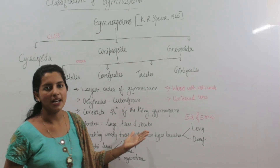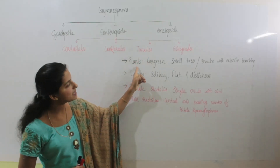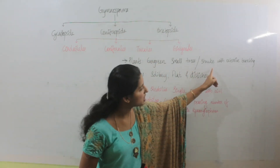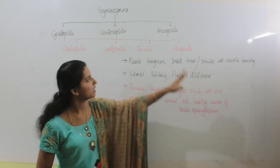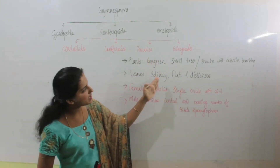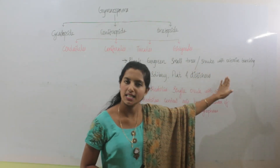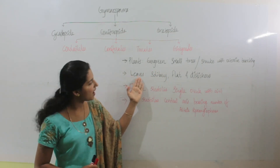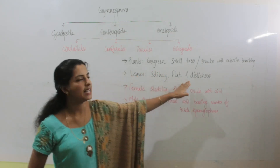Moving to the third order, Taxales. The members are evergreen small trees or shrubs with extensive branches. Taxales includes living members. The leaves are solitary, flat, and distichous.